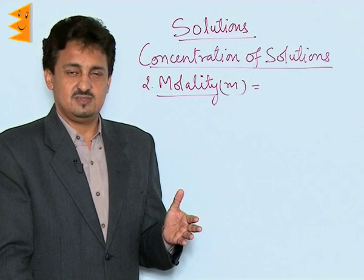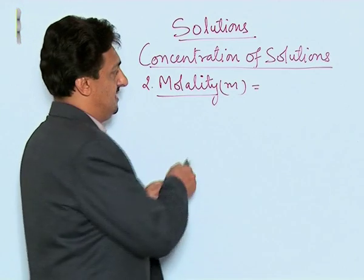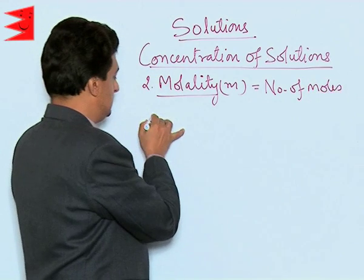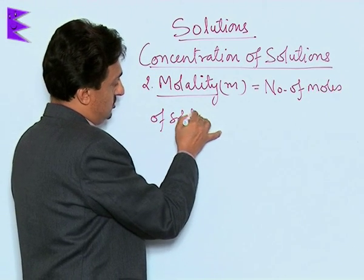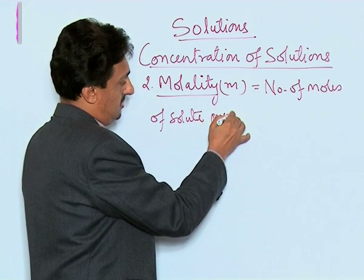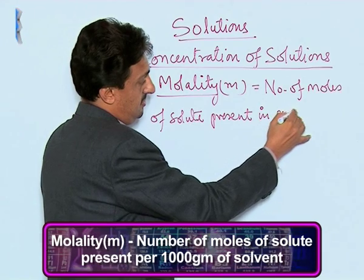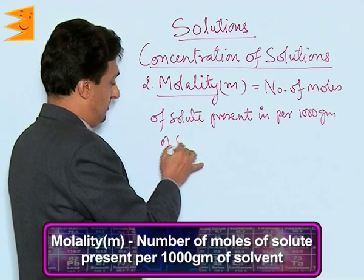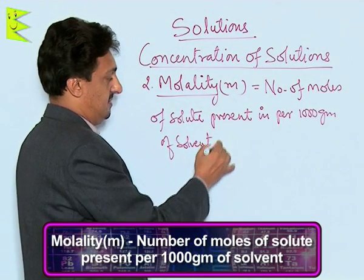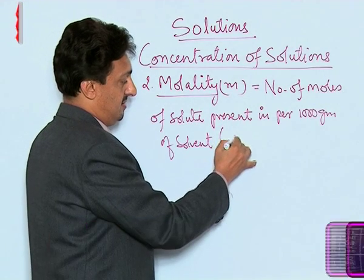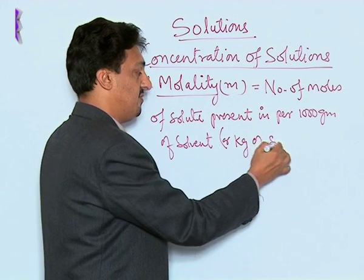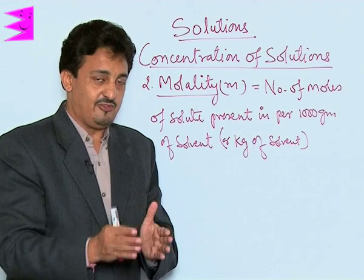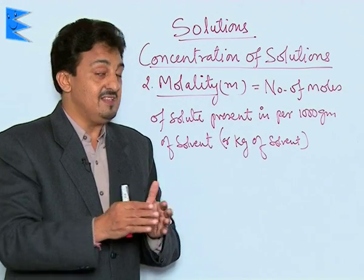How is molality different? Molality is defined as the number of moles of solute present per 1000 grams of solvent. You can also write it as per kg of solvent. So instead of taking the volume of the solution, and instead of taking the mass of the solution...